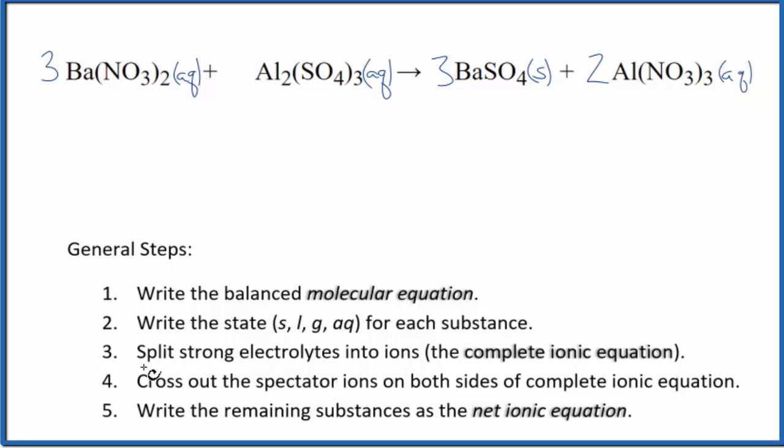Once we have the states, we can split up the strong electrolytes into their ions. And we'll get the complete ionic equation. Barium's in group two on the periodic table. It'll be two plus the whole nitrate ion, always one minus. Good one to remember. So three barium ions. And I won't write the states now. Let's do that at the end. Plus three times two is six nitrate ions. We have aluminum in group 13, has a three plus ionic charge. The whole sulfate, two minus. So we have two aluminum ions, the Al three plus. Plus we have three sulfate ions.